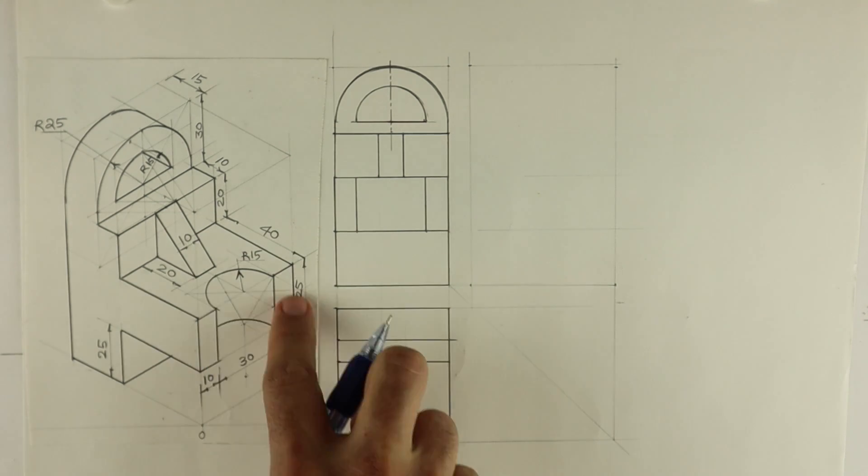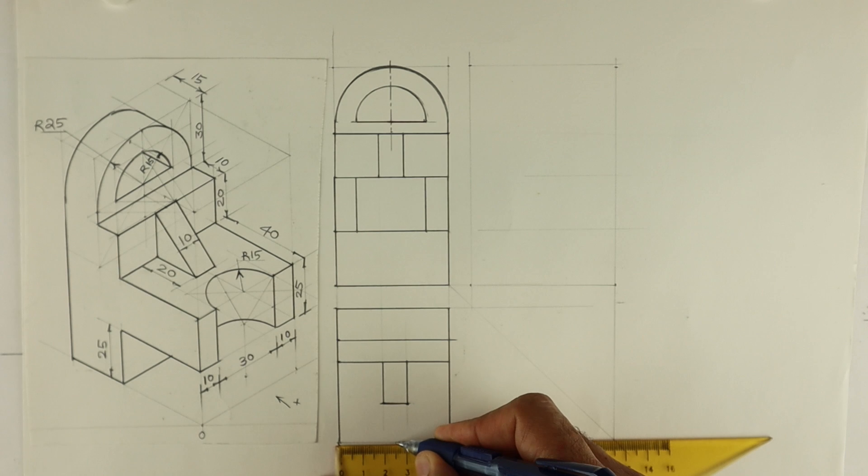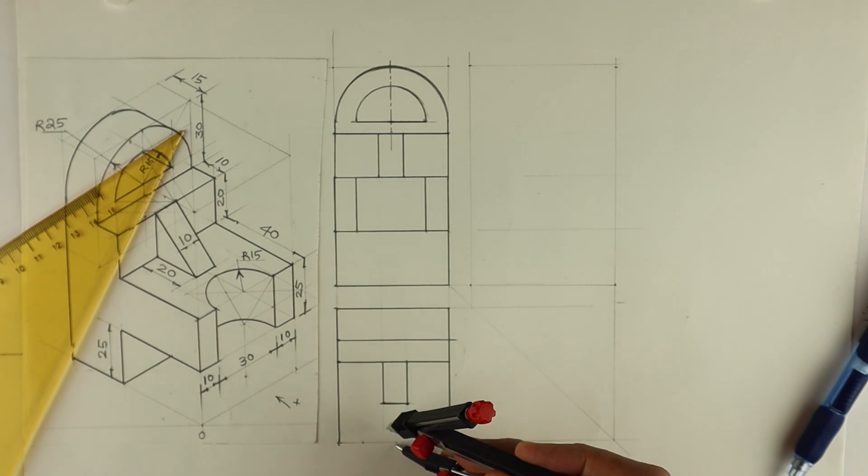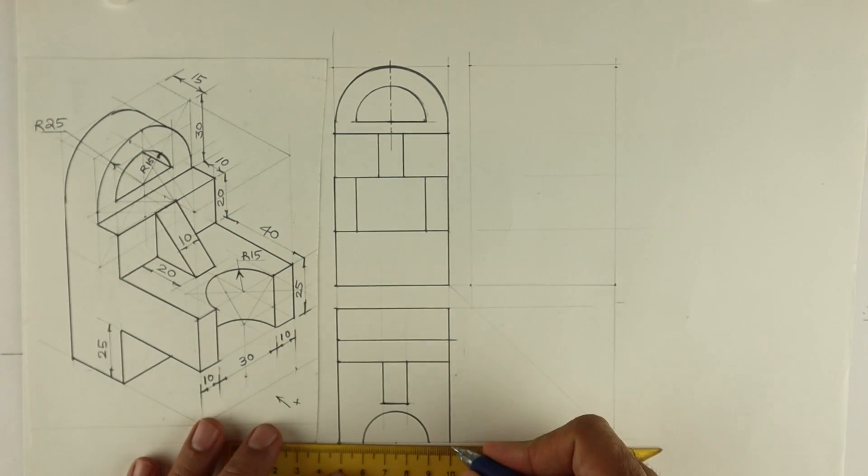Now after this, we need to draw this circle which radius is 15. So take center point and take 15, 15 on both the sides, and again you draw half circle. So we are almost done with top view. We need to draw dotted line in top view. This will be dark.